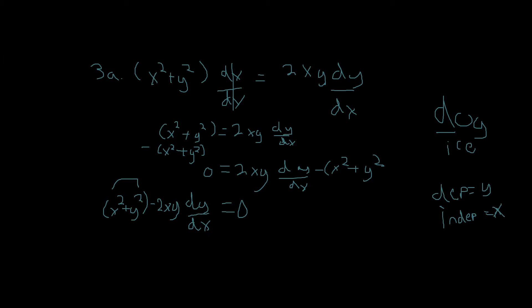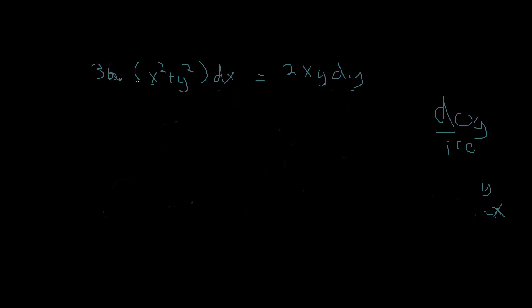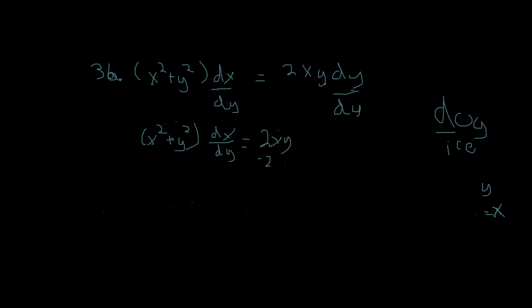Now let's do this one more time. The second way to solve it is to divide by dy instead — the exact opposite of what we did. We get x squared plus y squared, which is the circle, giving us dx/dy. Subtracting 2xy to the other side gives us x squared plus y squared minus 2xy, and then dx/dy equals zero.